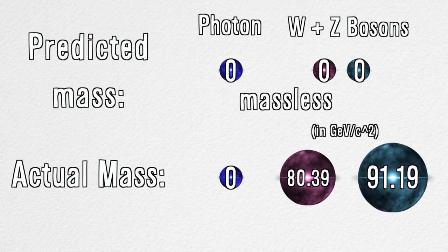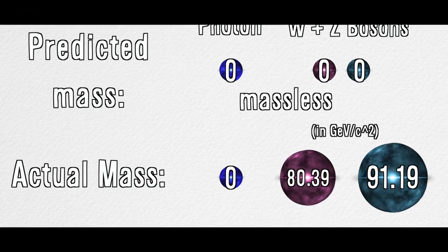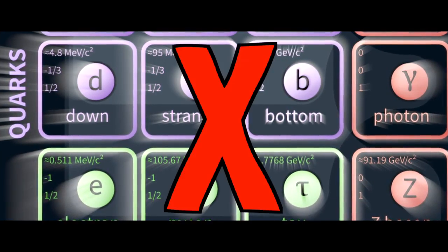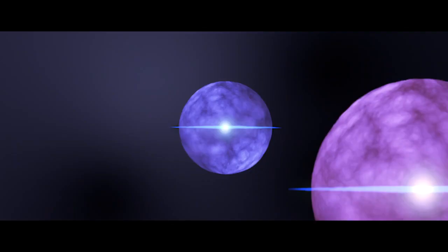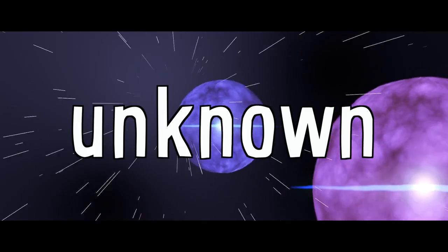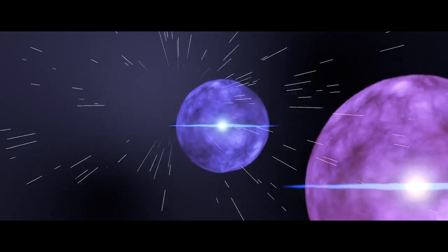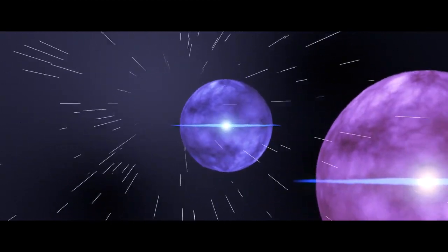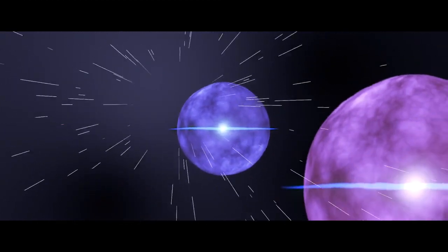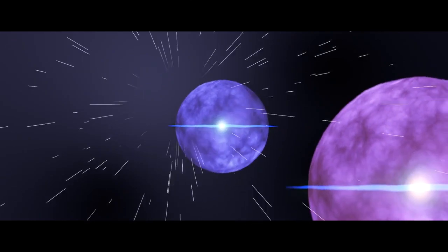This meant one of two things: either decades of theories were wrong, or something else, unknown, was adding mass to the particles. This unknown was later discovered to be the Higgs boson.